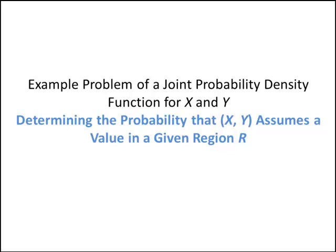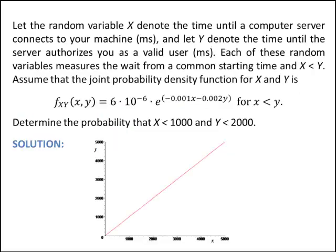Here's the particular example we're looking at. Let the random variable x denote the time until a computer server connects to your machine, and let the random variable y denote the time until the server authorizes you as a valid user. Each of these random variables measures the wait time from a common starting point, and we're given the extra condition that y is greater than x.